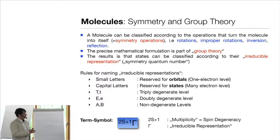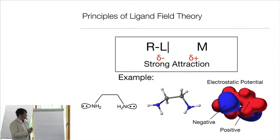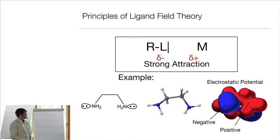Now I will give you the simplest possible version of ligand field theory. To start, we have to see what drives the formation of a complex. On the most superficial level, you have a transition metal ion that is typically positively charged, and a ligand that is either negatively charged or has regions that are partially negatively charged — so there is an electrostatic attraction. For example, a simple ligand like ethylenediamine has an NH₂ group with a lone pair in a region of negative electrostatic potential, making it a hot spot for attachment to a metal.